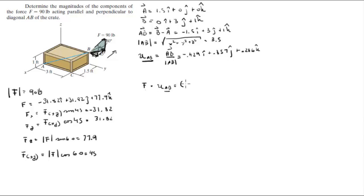So F is negative 31.82i plus 31.82j plus 77.9k. And the unit vector is negative 0.429i plus 0.857j plus 0.286k.